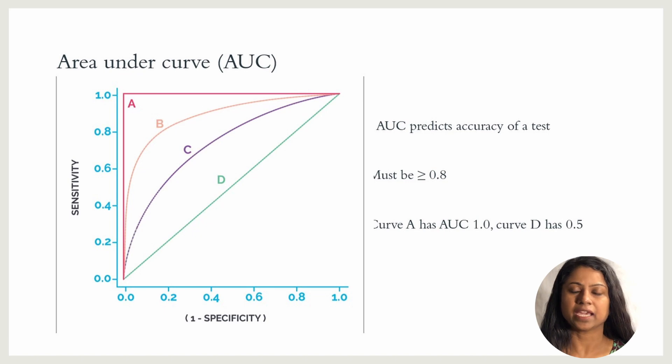In the figure, test A has the highest possible area under the curve, and it is the perfect test with highest possible accuracy. Accuracy increases as the curve shifts to the top and left. Higher the area under the curve, higher is the accuracy of a test.